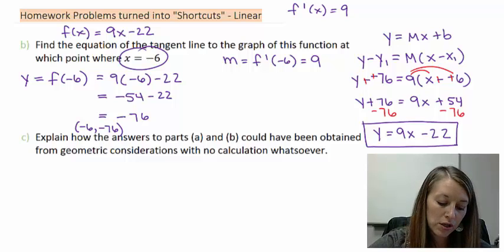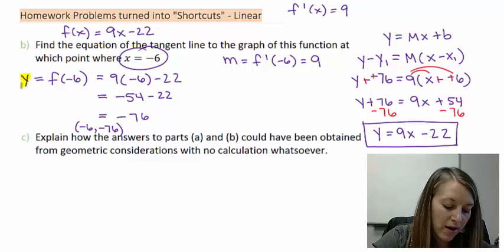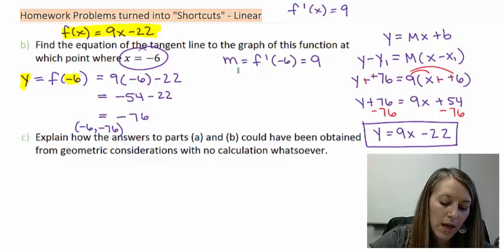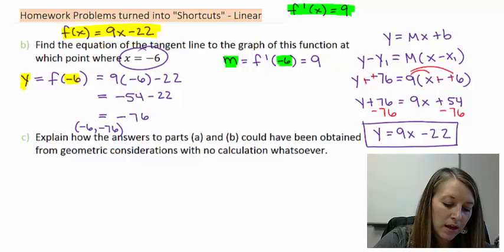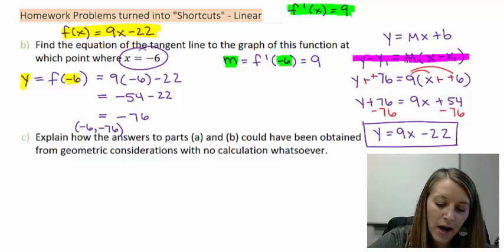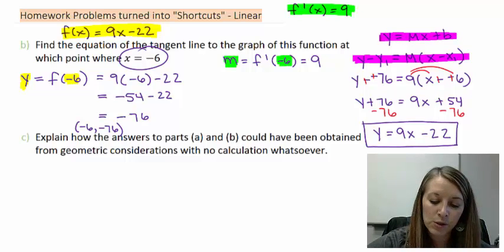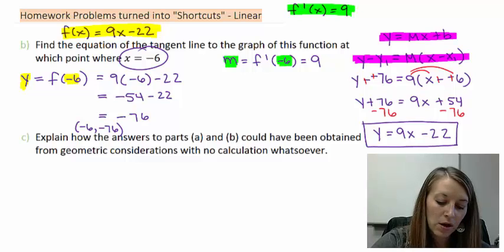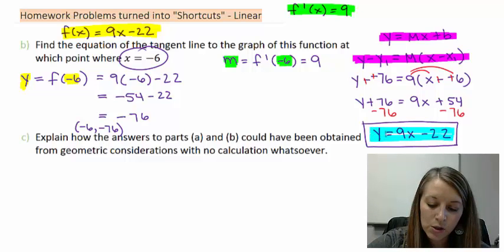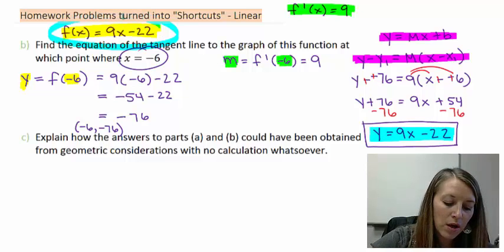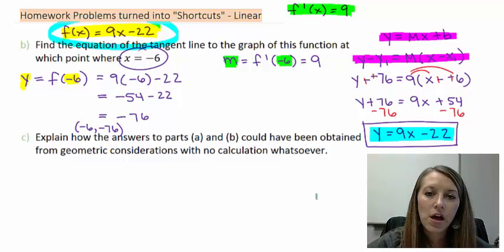In finding the equation of the tangent line, we had to first find our y value by plugging in negative 6 into our original equation. We had to find our slope by plugging negative 6 into our derivative equation. And then, we substituted that in using the point-slope formula, but you could also use slope-intercept formula as well. Notice the answer that we came up with was y equals 9x minus 22. This should look really familiar because that is also the original equation.